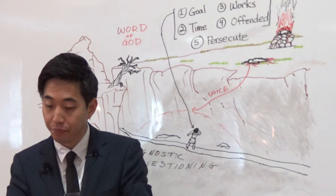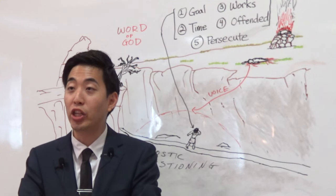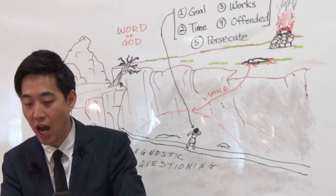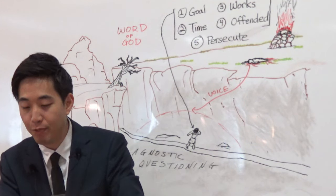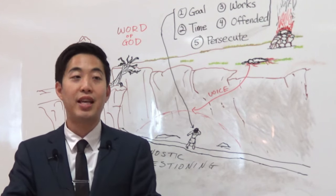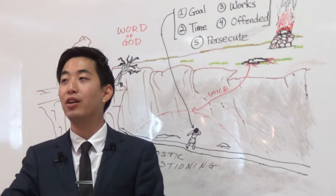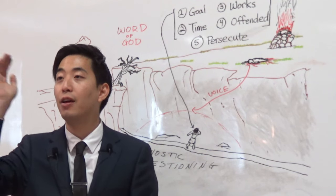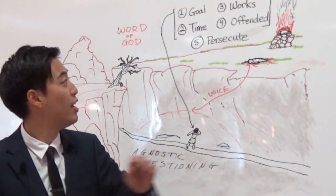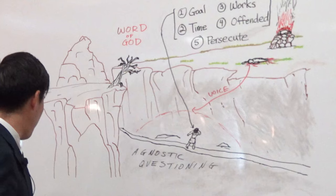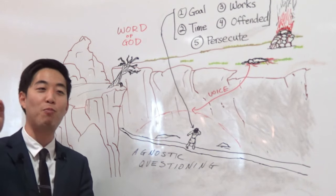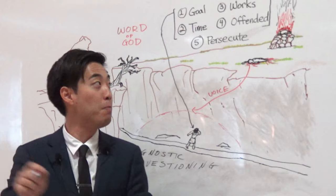Hebrews chapter 11, verse 4. By faith, Abel offered unto God a more excellent sacrifice than Cain, by which he obtained witness that he was righteous. So there's evidence here, right? God testifying of his gifts. Relying on the blood of the Lamb. That's what's speaking to Cain. And that's been preaching against Cain ever since till today.